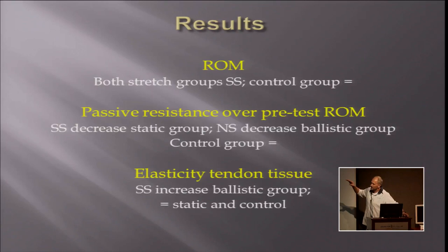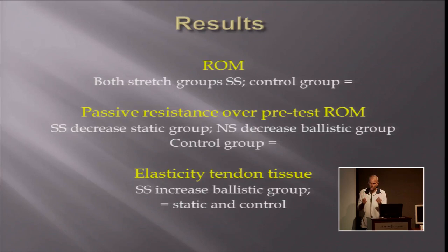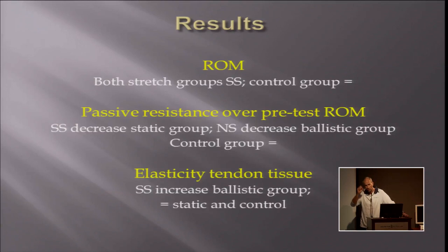When we look at elasticity in the static group, we saw that static stretching did not influence the tendon elasticity. In other words, if the passive resistance is decreased but there is no change in tendon stiffness, we must conclude that something happened in the muscle itself. This is an indirect way of identifying where the increase in range of motion comes from, since we have no in vivo measurements to measure the amount of sarcomeres in a muscle. In the ballistic stretching group, there was no significant difference in passive resistance. However, we found a significant increase in the elasticity of the tendon.